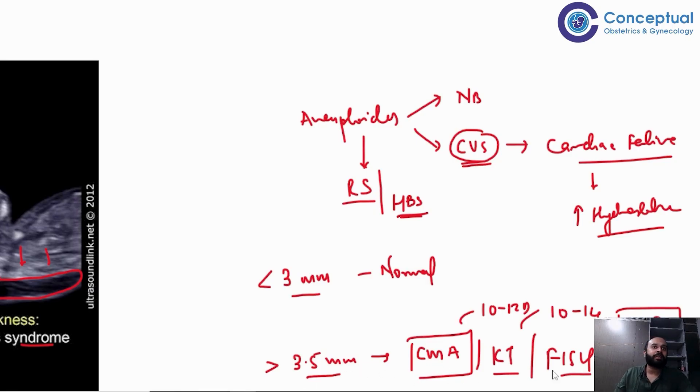If it is more than 3.5 mm then definitely I need to do an invasive test. Invasive test means I need to take out amniotic fluid and test it. If it is between 3 to 3.5 mm then I need to check the centiles. Centiles are 0 to 100, just like in NEET PG you had a centile. If it is more than 99 centile then you should understand there is increased nuchal translucency. Less than 3 is safe. More than 3.5 definitely not safe, and 3 to 3.5 if it is more than 99 centile you will be doing those tests.